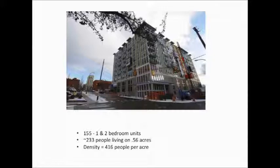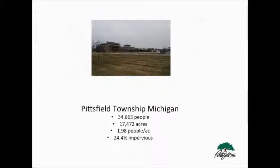And this is 155 units, one and two bedroom. So if you figure there's 50% of each and there's one person per bedroom, I figure there's probably going to be about 233 people living on about a half an acre. And that density is 416 people per acre. So you have an area that's going to run off a lot of volume of water when it rains, but it's serving 416 people.